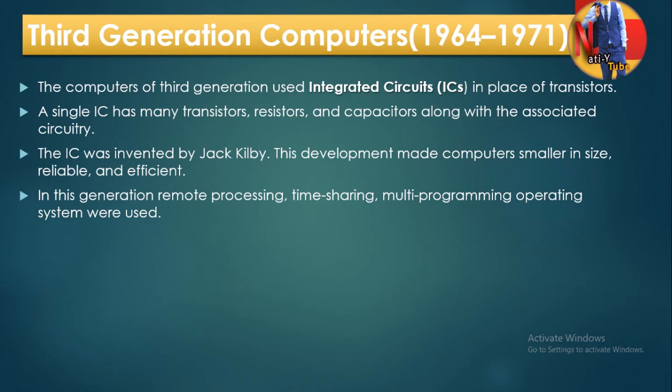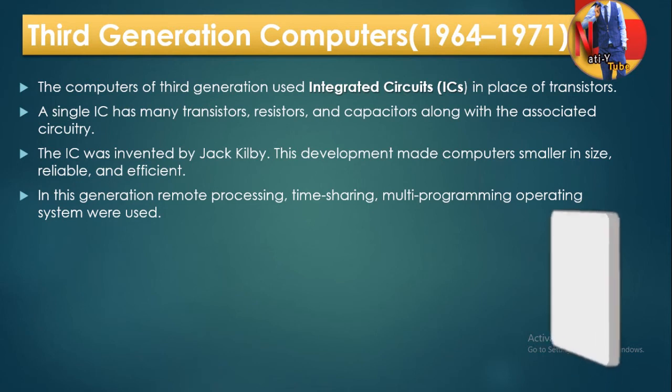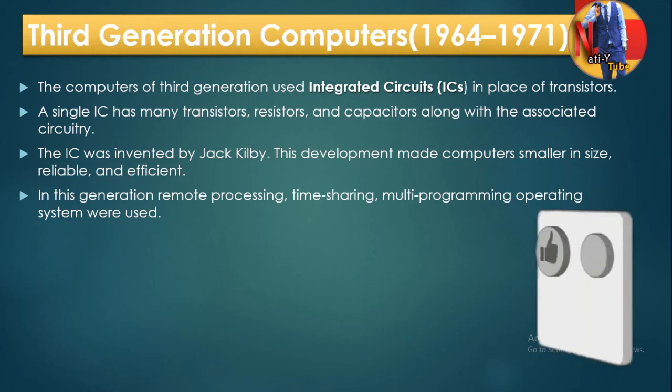Parallel processing allows several processes or programs to run at the same time on a uniprocessor system. The processor executes each program and process in turn.